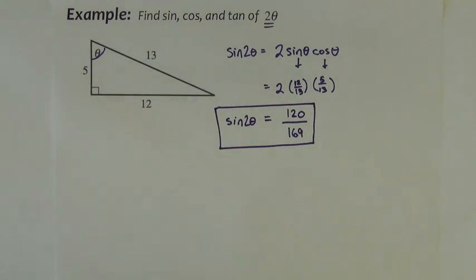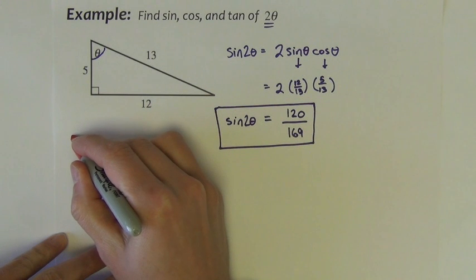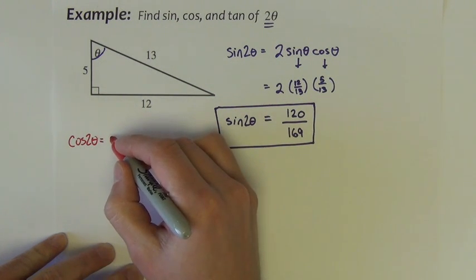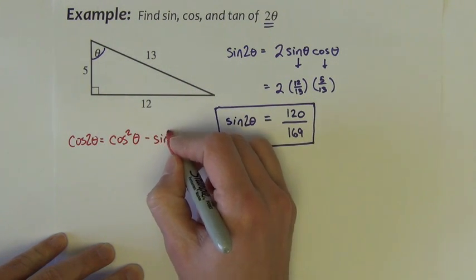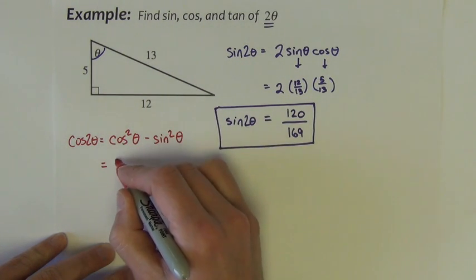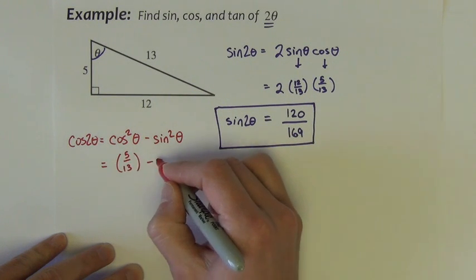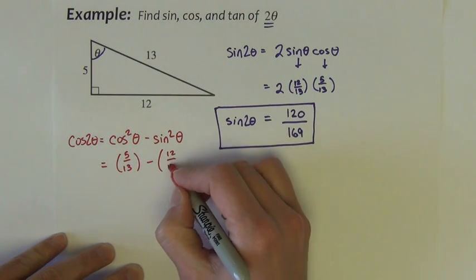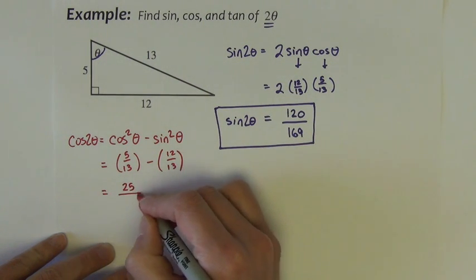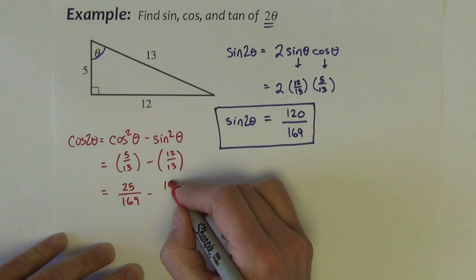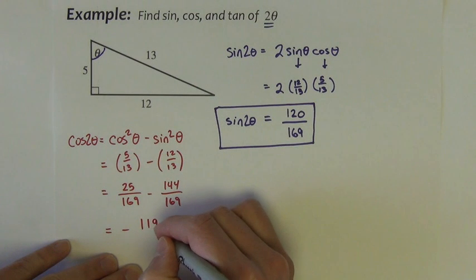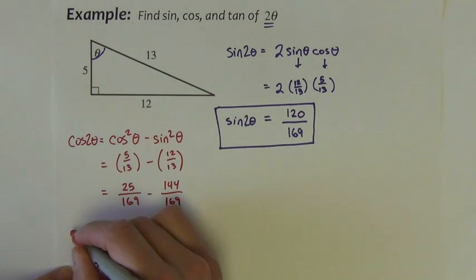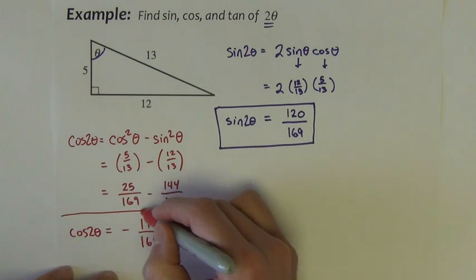Next let's find the cosine of 2 theta. Let's do that over here. I find it best to always work with, or for the most part, work with this form of cosine 2 theta. So, I'm going to square my cosine fraction, cosine is 5 thirteenths, minus, I'm going to square my sine fraction, which is 12 thirteenths. So, this is 25 over 169 minus 144 over 169. We're going to subtract 25 minus 144. It's negative 119 over 169. There's cosine 2 theta.